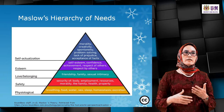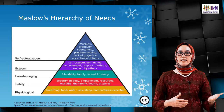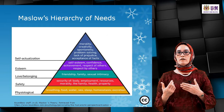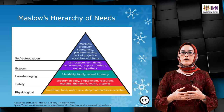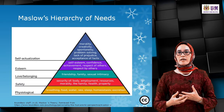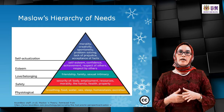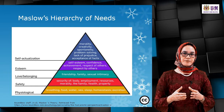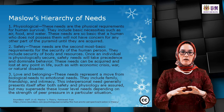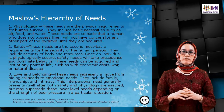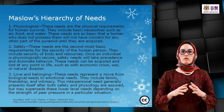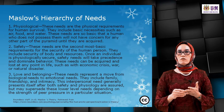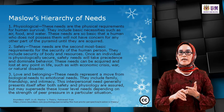Safety needs include security of body, employment, resources, morality, family background, health, and property. The speaker notes that supervising PhD students involves understanding their constraints — such as family problems or health issues. For love and belonging: friendship, family, and intimacy. For esteem: self-esteem, confidence, achievement, and respect of others and by others. As a lecturer for over 20 years, the speaker emphasizes respecting students' points of view and appreciating their work to build confidence.